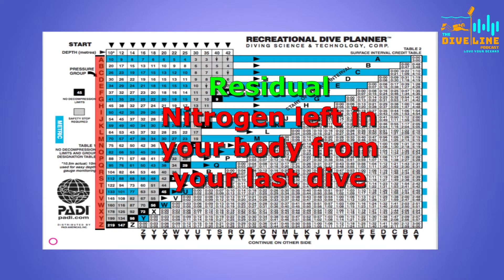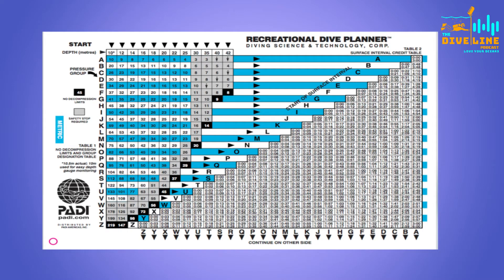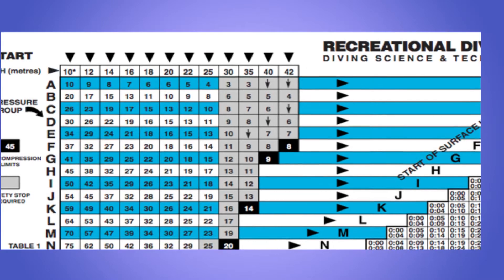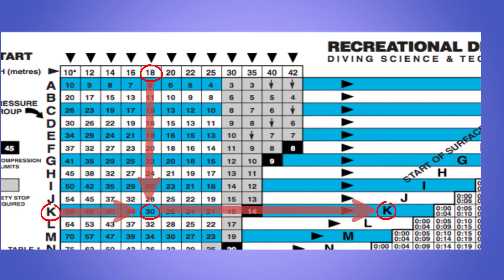When we go under the water, our body starts to absorb or soak up more of the nitrogen from our gas tank. As a new diver, if you went to your maximum depth of 18 metres and then stayed under the water for 30 minutes, you can see that you would soak up K amounts of nitrogen. So our pressure group after that first dive would be K.